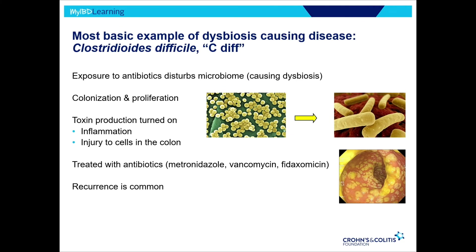The most basic example of dysbiosis causing disease is C. difficile — about 10% of people in this room have had it or know someone who has. Typically, exposure to antibiotics disturbs the microbiome, causes dysbiosis, gives C. diff a niche to colonize, proliferate, and produce a toxin that causes injury to cells of the colon — diarrhea, colitis, inflammation, pain. Even though it's caused by antibiotics, we treat it with antibiotics that have direct activity against C. diff — we used to use metronidazole a lot, now it's mostly vancomycin or fidaxomicin. Recurrence is very common: about a 20% chance it comes back, more if you have IBD — going up to 40% after a first recurrence. There are people that just can't break out of that cycle.